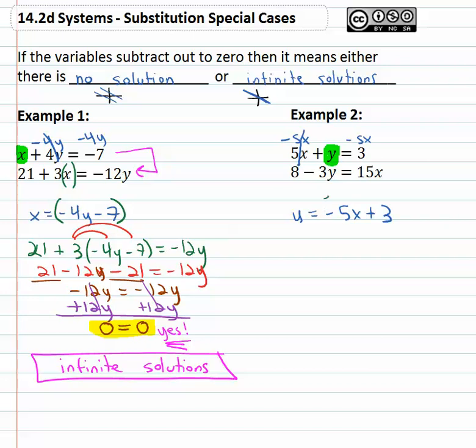And then as usual, we can take that stuff that y equals and replace the y in the other equation. So we now have 8 minus 3 times negative 5x plus 3 equals 15x. Continuing to solve then, we'll distribute through the parenthesis, 8 plus 15x minus 9 equals 15x.